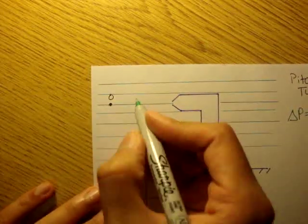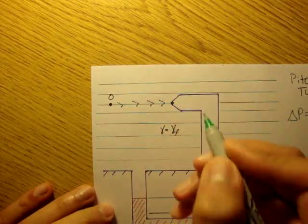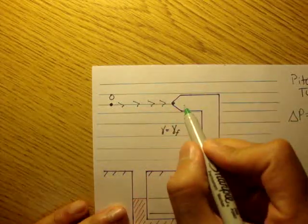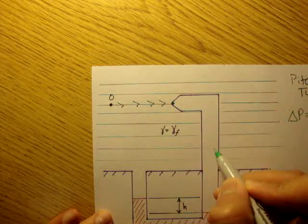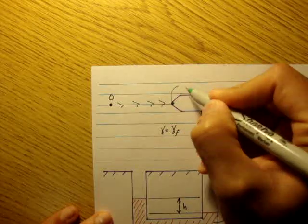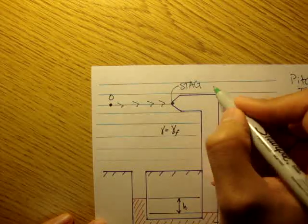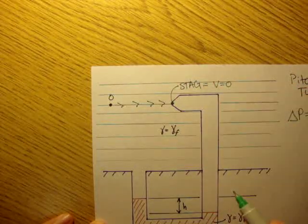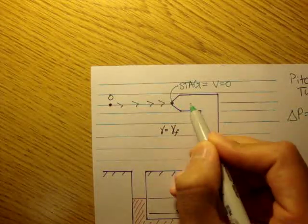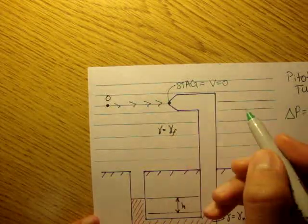Let's start our path beginning at point 0. We'll go this way, and this way, and hit the pitot tube right here. We said the velocity in this tube of air is 0. So this point right here is actually called a stagnation point — that's where the velocity is equal to 0. Because the fluid in here is in static equilibrium, the velocity here is 0.